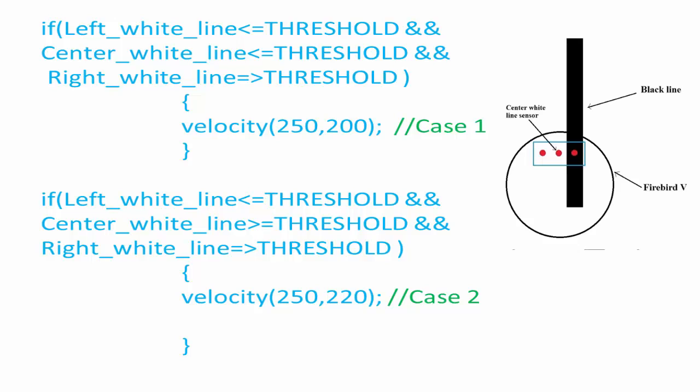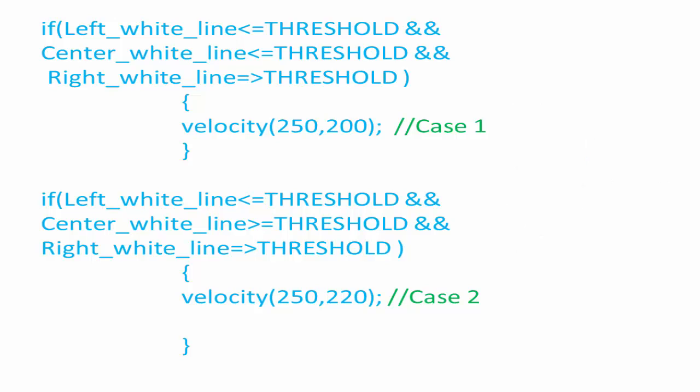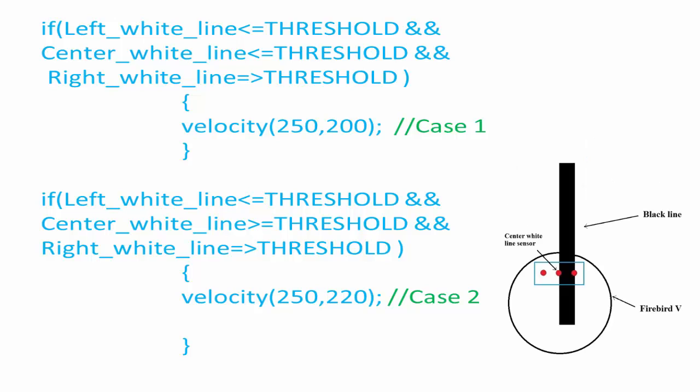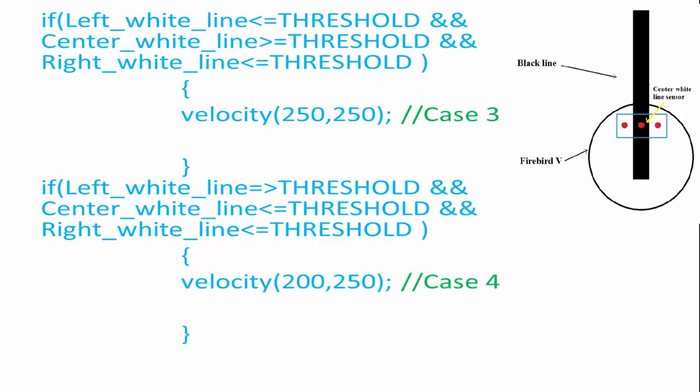Case 1 is when left_white_line and center_white_line are less than the threshold and right_white_line is greater than the threshold — the robot should turn soft right. Case 2 is when the black line is below the second and third line sensors — the robot should turn soft right with a slightly higher velocity on the right wheel compared to Case 1. Case 3 is when left_white_line and right_white_line are less than the threshold and center_white_line is greater than the threshold — the robot should go straight.